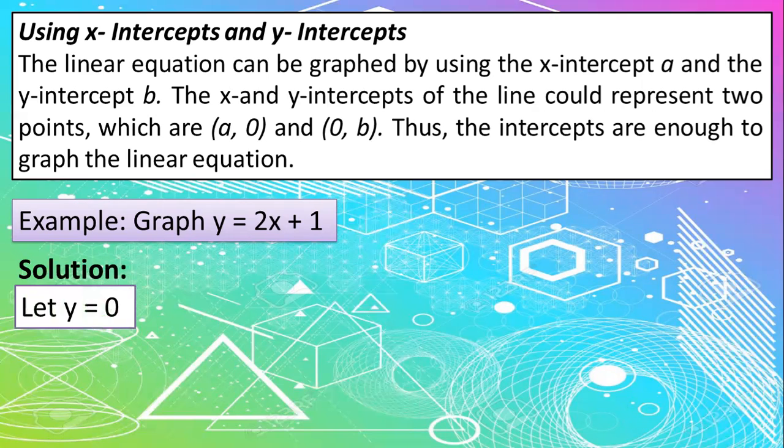But however, since we will represent it as (a, 0) and (0, b), we have, or we let the value of y be equal to 0. So it looks like (a, 0). So substitute. So we have y is equal to 0. That's why 0 is equal to 2x plus 1.